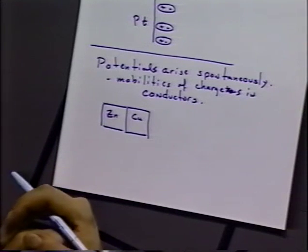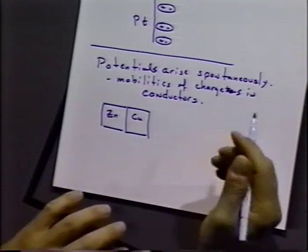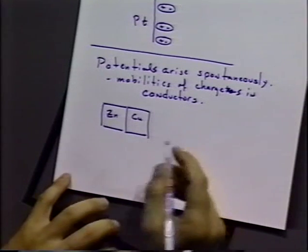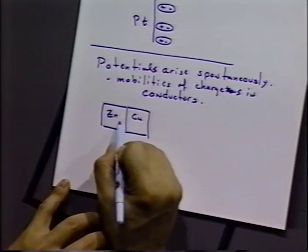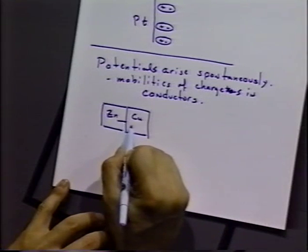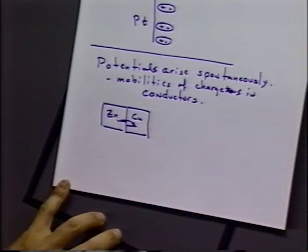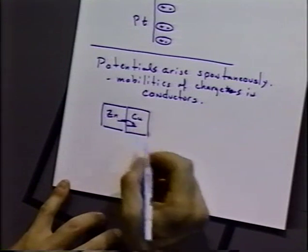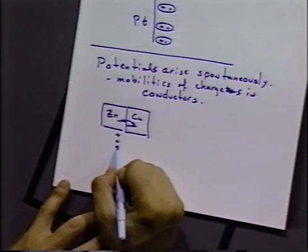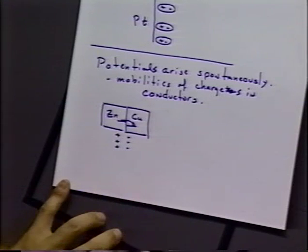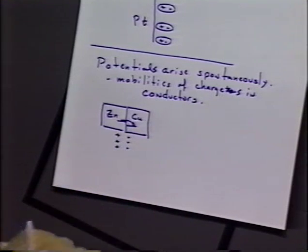Electrons will be transferred back and forth. For example, zinc having a little higher Fermi level than copper means there will be a net transference of electrons from zinc to copper, and we'll get an interfacial potential across that zinc-copper interface.